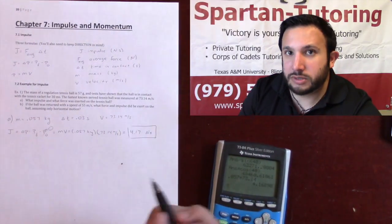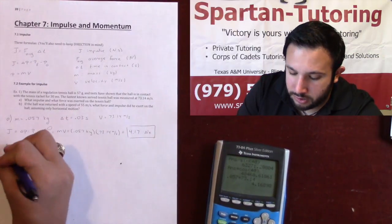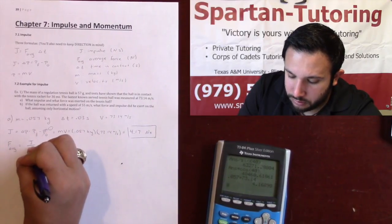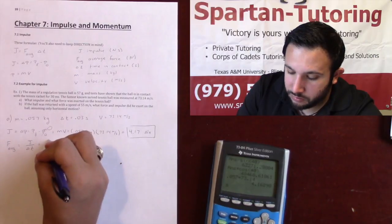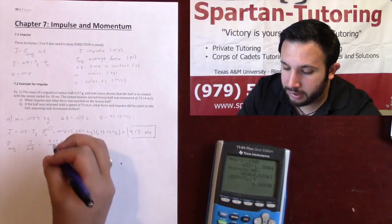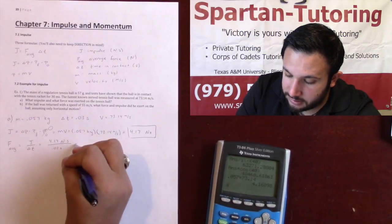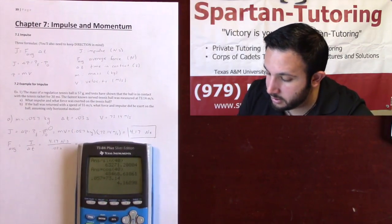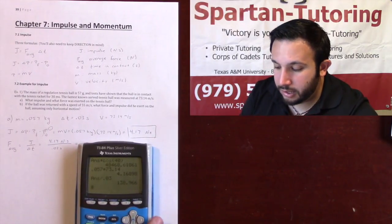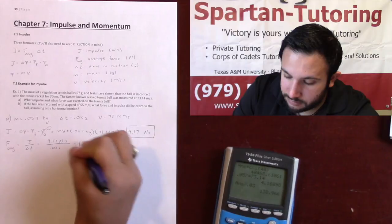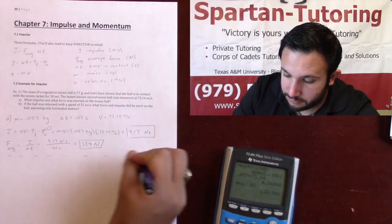Now I can find the force. Average force equals impulse over change in time. Impulse is 4.17 newton-seconds, and the ball was in contact with the racket for 0.03 seconds. Dividing gives us 139 newtons. That's part A.